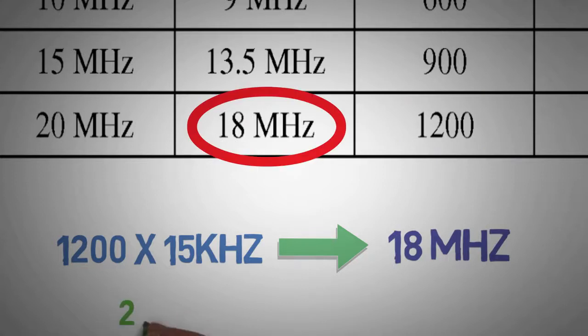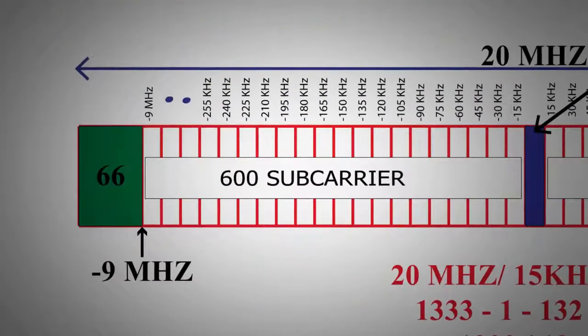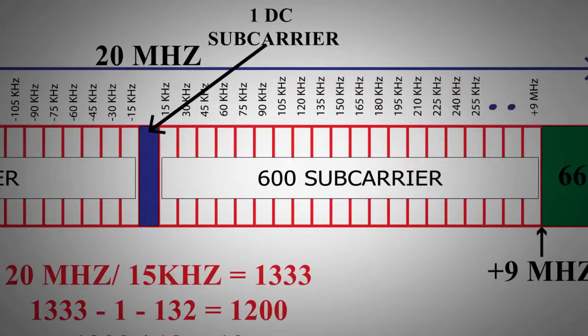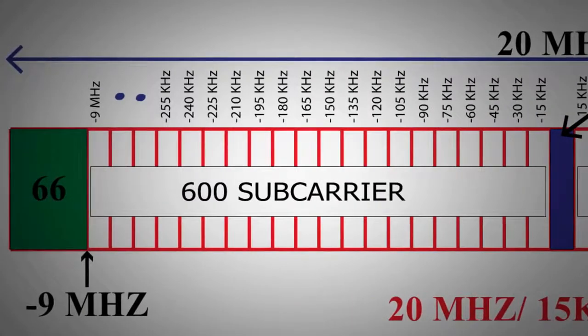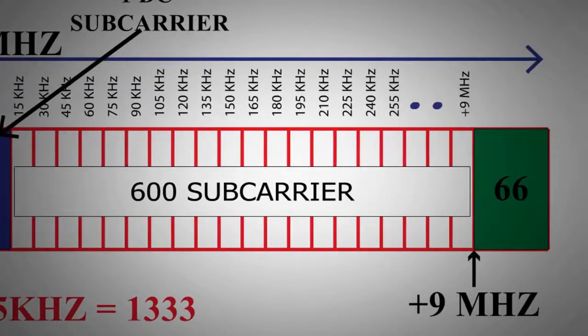2 megahertz is used as guard band. Here we have 600 sub-carriers on both sides of the DC frequency. All these carrier frequencies are harmonics of 15 kilohertz, varying from minus 9 megahertz to 9 megahertz.